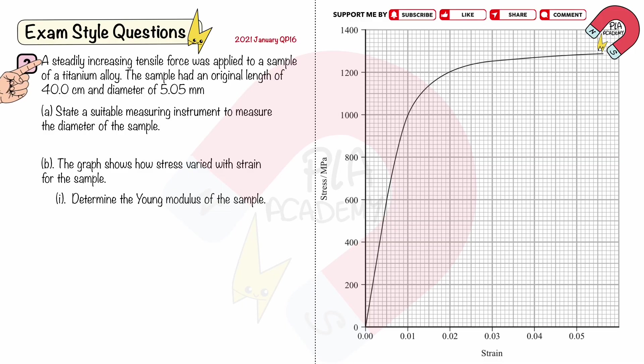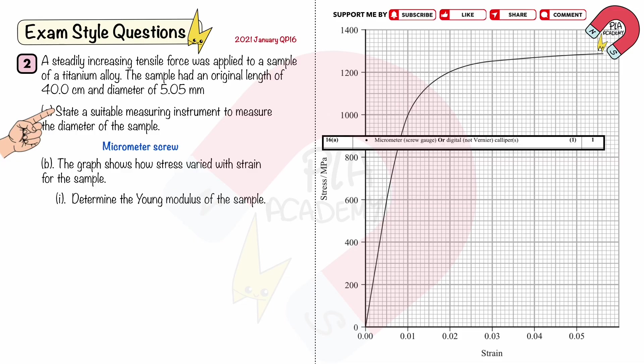Exam style question 2: a steadily increasing tensile force was applied to a sample of a titanium alloy. The sample had an original length of 40 centimeters and diameter of 5.05 millimeters. Part A: state a suitable measuring instrument to measure the diameter of the sample. We use a micrometer screw to measure the diameter. You will get one mark for: using a micrometer screw or digital vernier caliper.